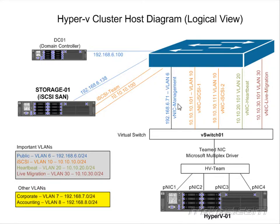Quality of service is what allows us to use this configuration. Without it, for example, if we're live migrating a bunch of virtual machines it might use up all the bandwidth and choke out the management network, iSCSI network, or cluster communications network. Back in the old days it was better to separate different traffic types onto separate physical network adapters. But quality of service makes it possible to team all our NICs together, which actually increases overall throughput.